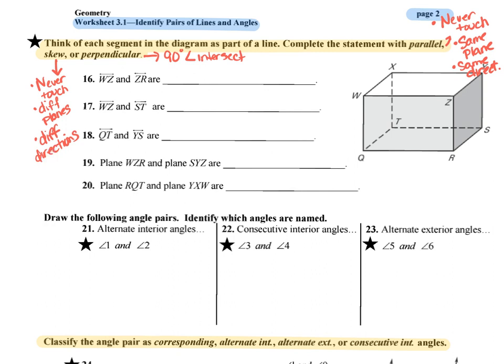The first question is WZ — that goes across the front — and ZR, which is right here. When we look at those two lines, we can definitely see that they intersect right here. The question is really whether they intersect at 90 degrees, and the answer is yes. So we answer perpendicular.